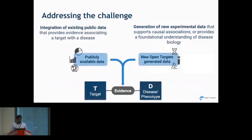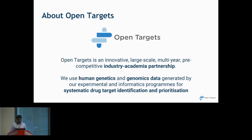OpenTargets was founded to address these challenges in two ways. First, we integrate existing public data that helps in associating targets with disease. We also generate a lot of experimental data that supports causal associations to provide new understanding of disease biology. OpenTargets is an innovative large-scale multi-year pre-competitive academia-industry partnership, and we use genetics and genomics data generated by our experimental and informatics programs for systematic drug target identification and prioritization.